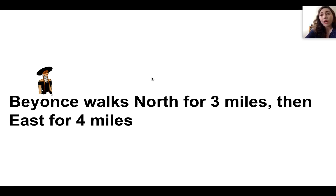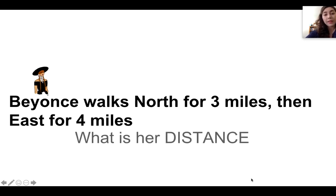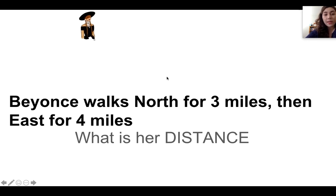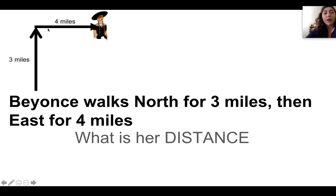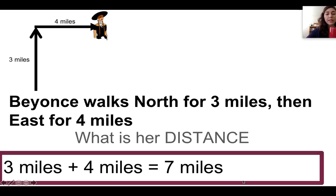Beyoncé walks north for three miles and then she walks east for four miles. Her distance is the length of all the paths traveled added together — three plus four — so her distance is seven miles, the total path length added together.